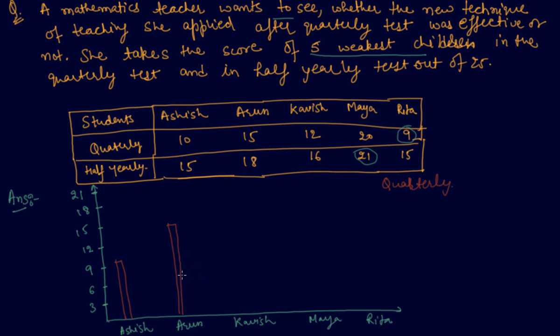Students, my drawing is not that good. So the lines are not that vertical. So please bear that. For Kavish, it should be 12. For Maya, it is 20, 1 less than 21. And for Rita, it is 9 again. It should be here.